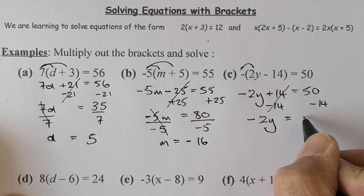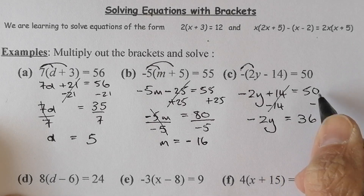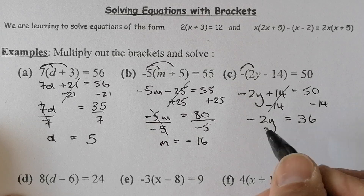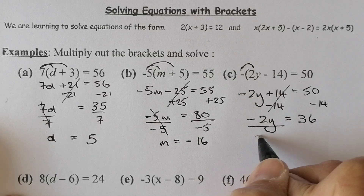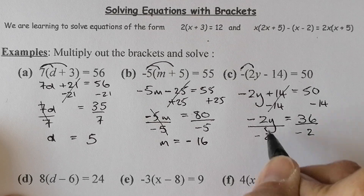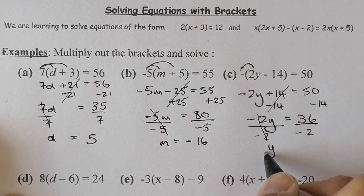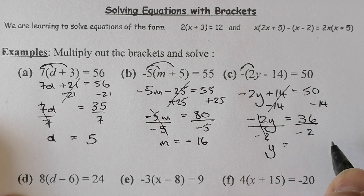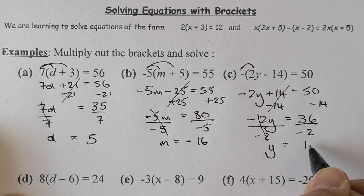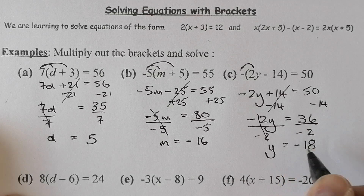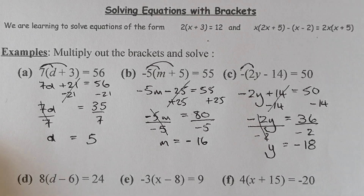That leaves me with minus 2y on this side and 36 on the right-hand side — 50 take away 14. I'm going to divide by minus 2 on both sides. These cancel, leaving me with just y. 2 into 36 leaves 18. I've got one negative sign, so it's going to be negative 18. So y equals minus 18. That's the three of these completed.